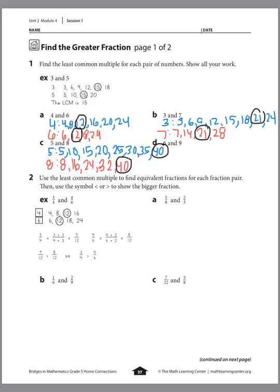And for D, we'll do the same thing again — listing out the multiples of 6 and 9. For 6: 6, 12, 18, 24. Listing out for 9: 9, 18, 27. We're going to stop there because we see a multiple in common — 18. So 18 is the least common multiple for 6 and 9.